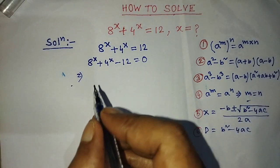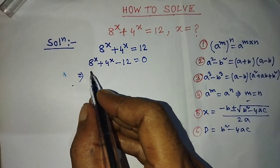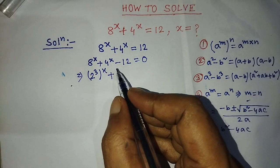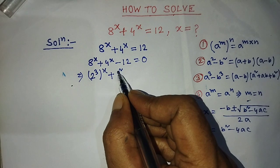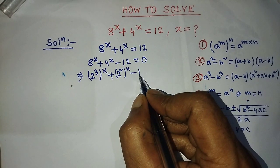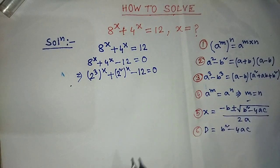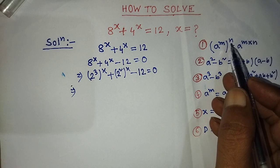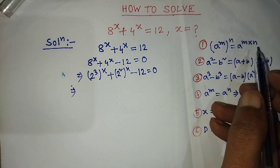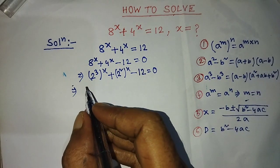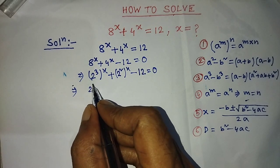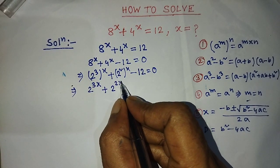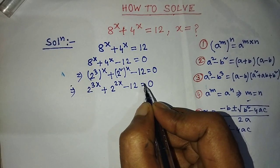After that, on the left hand side, we have to write 8 and 4 in exponential form. So we write 2 to the power 3 whole to the power x, plus 2 squared whole to the power x, minus 12 is equal to 0. Then we apply the formula: a to the power m whole to the power n equals a to the power m into n. So the left hand side becomes 2 to the power 3x plus 2 to the power 2x minus 12 is equal to 0.